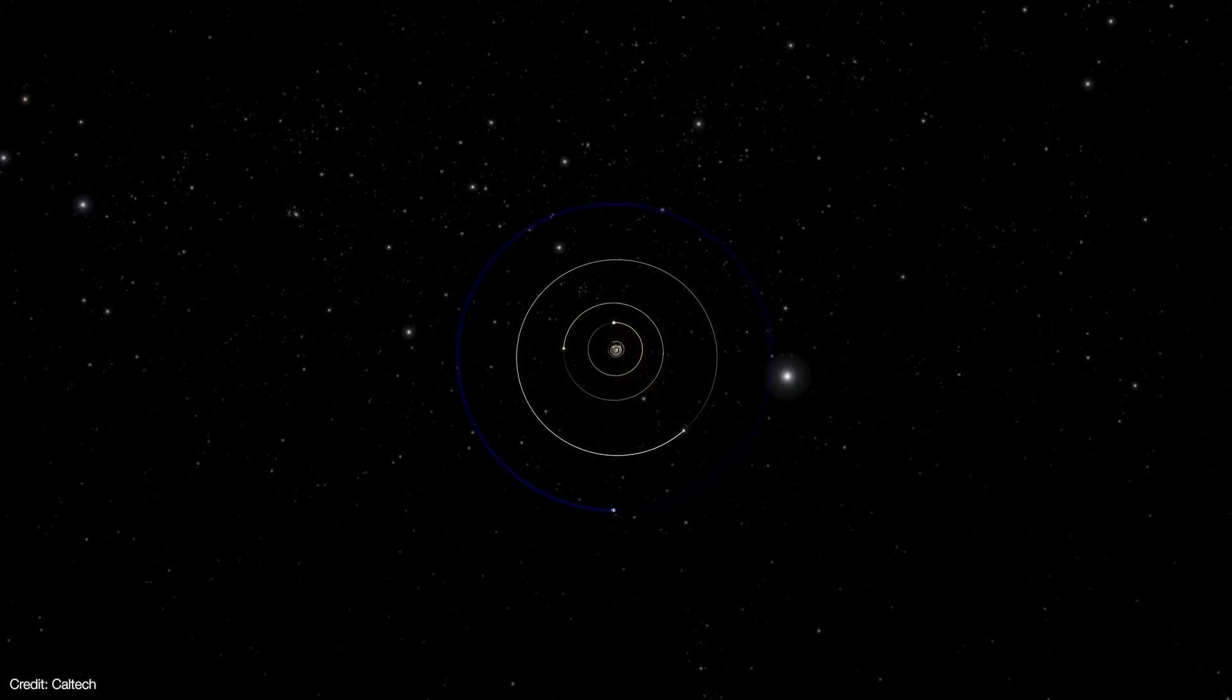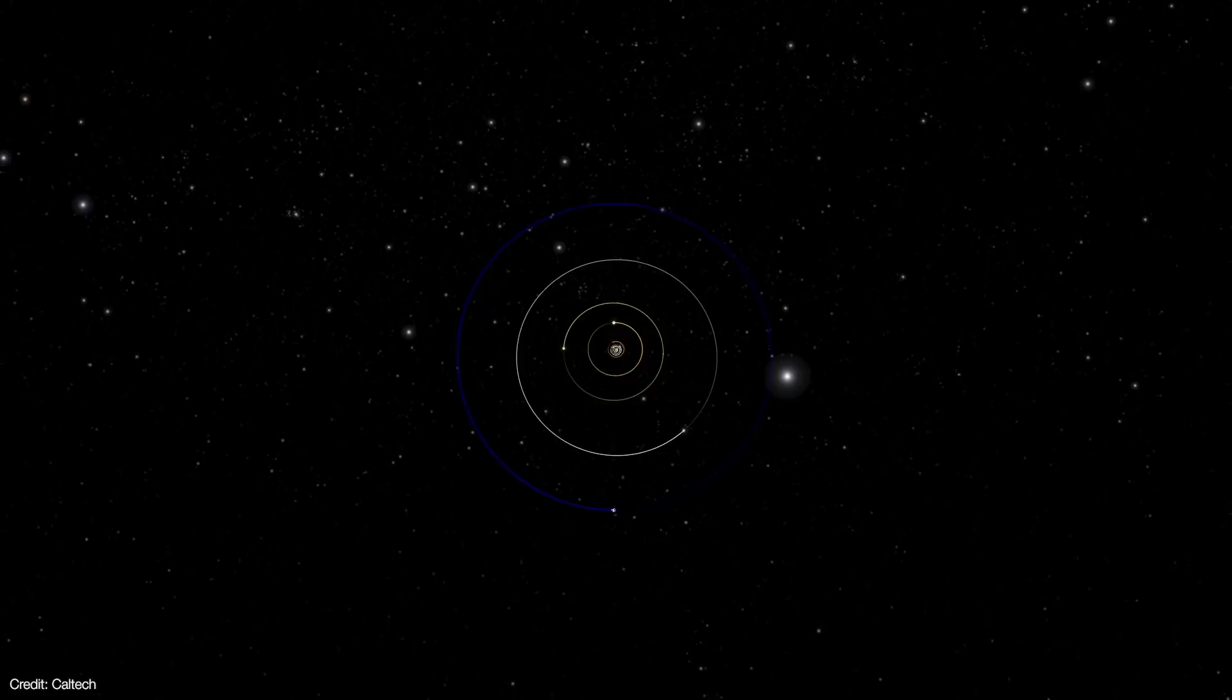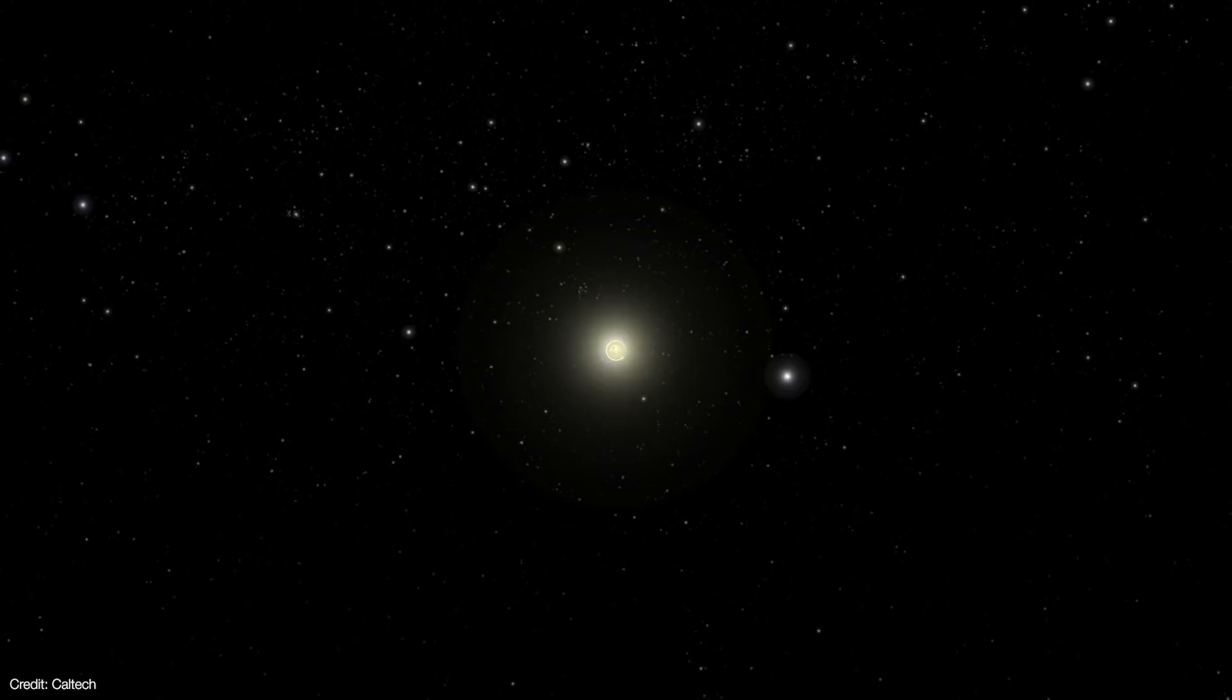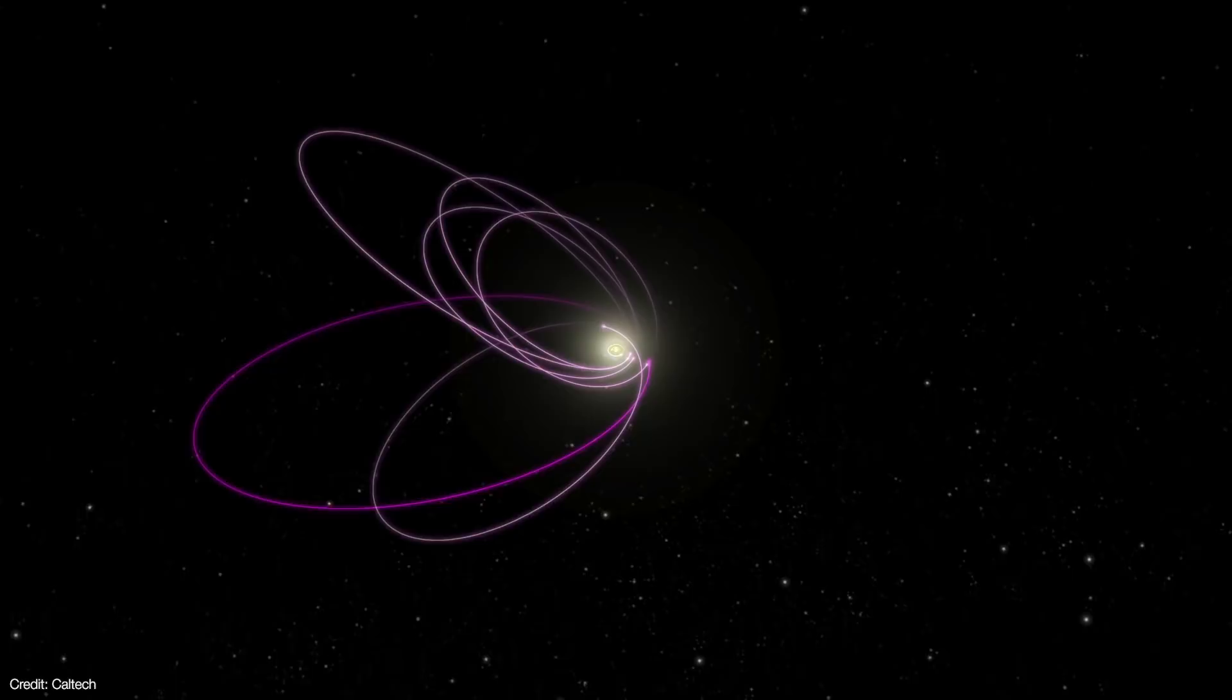Now to quickly recap, Planet 9 is a planet that's thought to exist in the distant outer solar system. It was proposed as a way of explaining the orbits of distant solar system objects like Sedna, the Goblin, and many others.